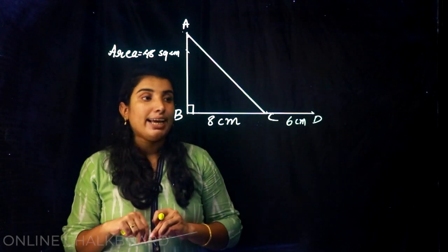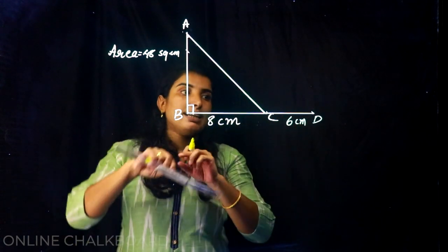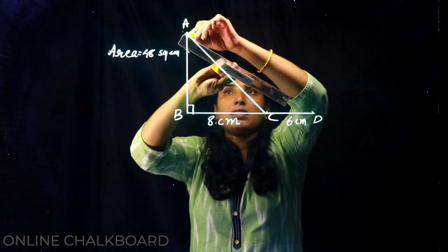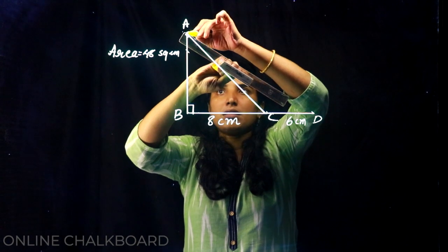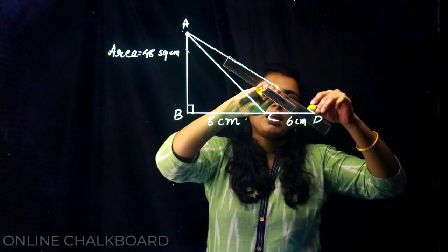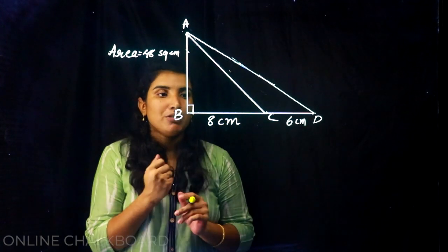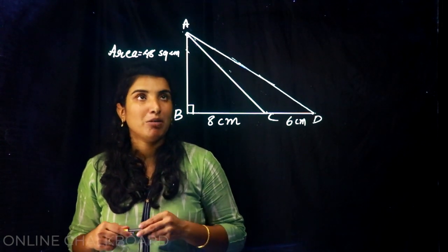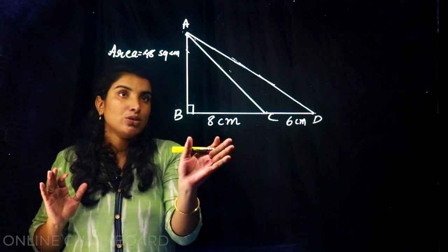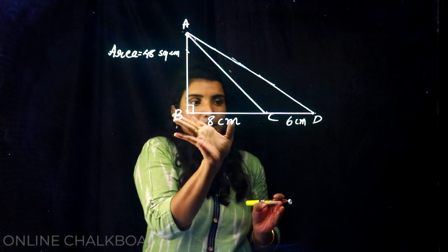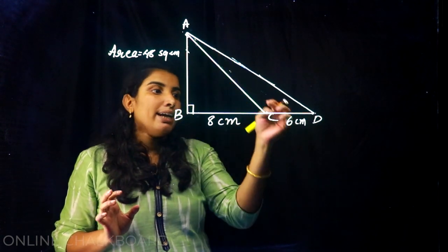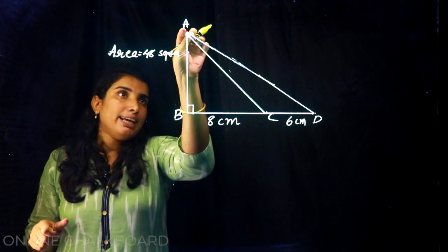What is the area of triangle ADC? We have triangle ABC where B is right. ABC's area is 48 square centimeters and BC's length is 8 centimeters. Then we have D as a line of 6 centimeters extended from BC. Then we need to find the area of triangle ACD.